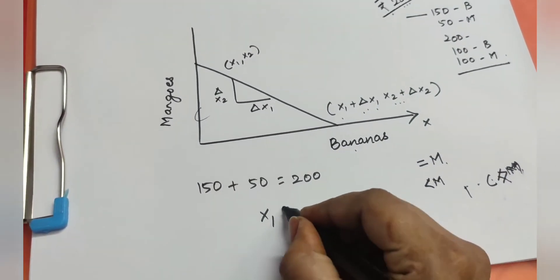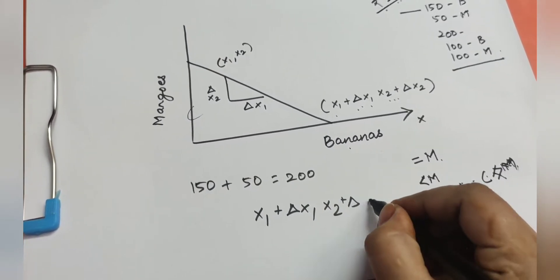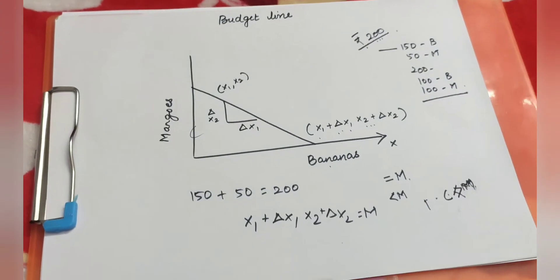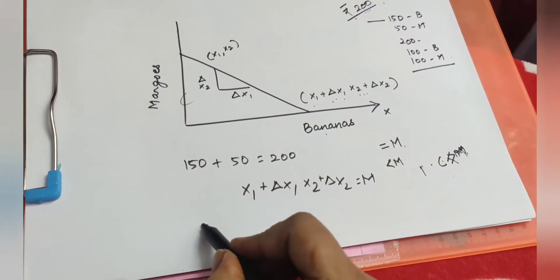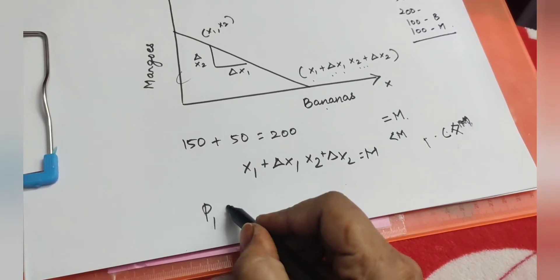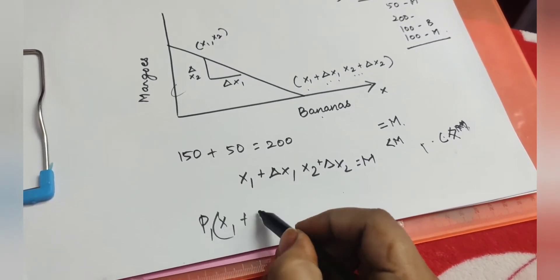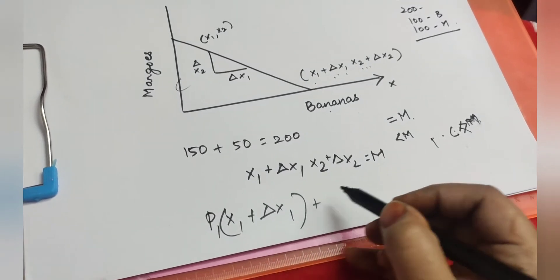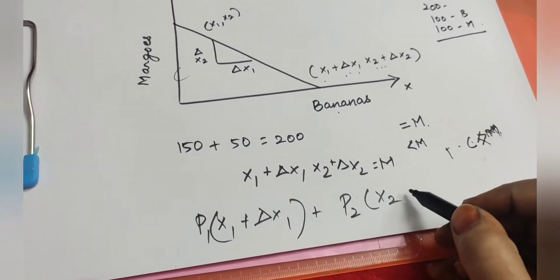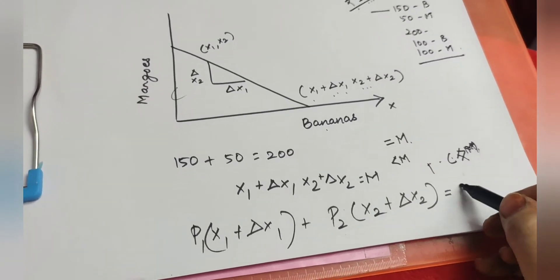The budget line formula is: (X1 + ΔX1) + (X2 + ΔX2) = Income. In price terms: P1 × (quantity of banana + any change in quantity) plus P2 × (quantity of mango + any change in quantity) equals income. This means total expenditure on all goods must equal the consumer's income.